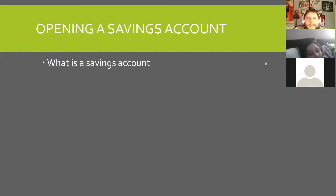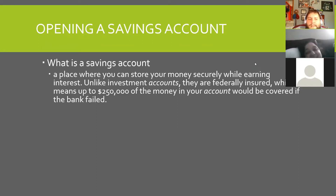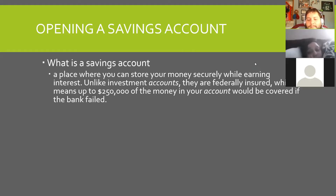A savings account is a place where you can store your money securely while earning interest. Unlike investment accounts, they are federally insured, which means up to $250,000 of the money in your account can be covered if the bank fails. That means if something happens to the bank, you get some part of your money back.